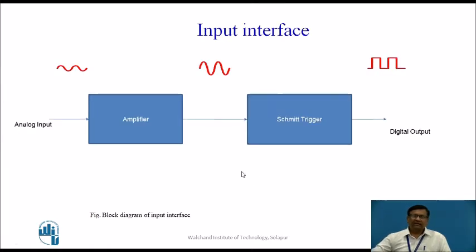Now let us see the input interface present in all of the IC74C-related circuits. This is the block diagram of the input interface circuit, which consists of an amplifier and a Schmitt trigger.